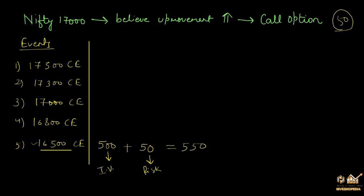In technical terms, this 500 rupees is called the intrinsic value, because the option seller is already in a notional loss of 500 rupees and charges that upfront. The 50 rupees he charges for the risk due to the time remaining before expiry is called TVM — time value of money. In technical terms, the event price is called the strike price. The total premium is divided into two parts: intrinsic value and time value of money.